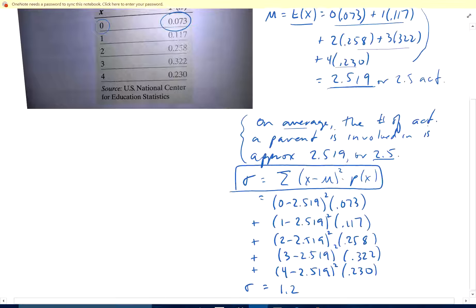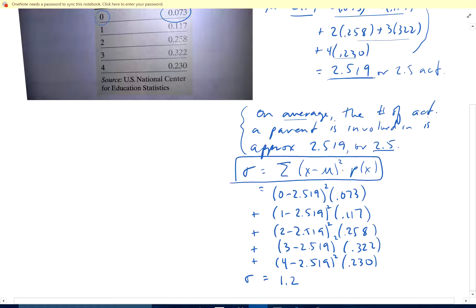The standard deviation is how spread out the data is. That's given by the sum of x minus the mean squared times the probability of x. So it's 0 minus the mean squared times the probability, plus 1 minus the mean squared times the probability, 2 minus the mean squared - it's just like normal standard deviation calculations. If you do that, you get 1.2 activities. So there is problem 18.